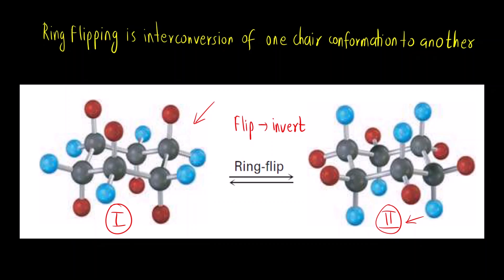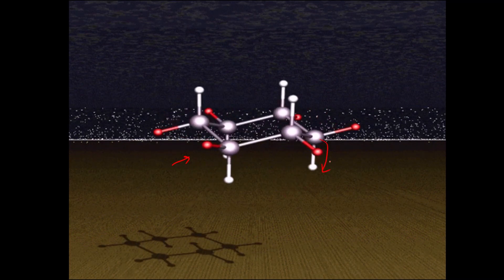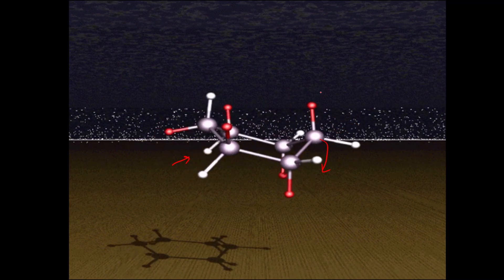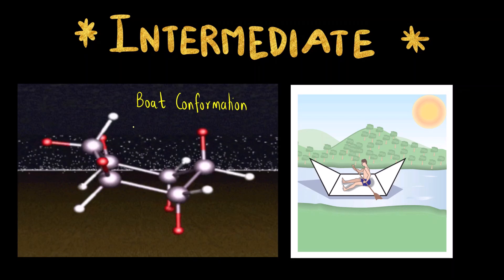Let us see this video to understand how ring flipping takes place. You can see here this carbon goes above, the intermediate is a boat conformation, and at the same time this carbon goes below. So the intermediate formed during ring flipping of cyclohexane is the boat conformation — this can be asked as a one-mark or objective question.